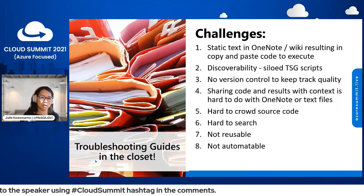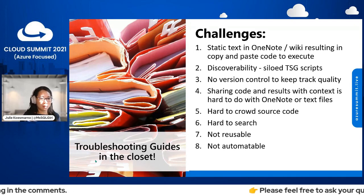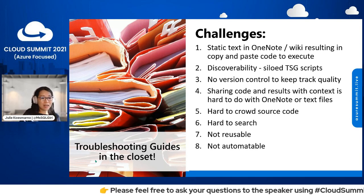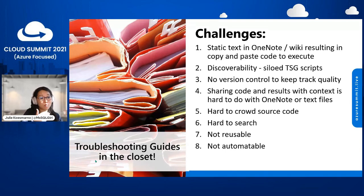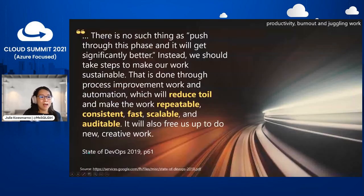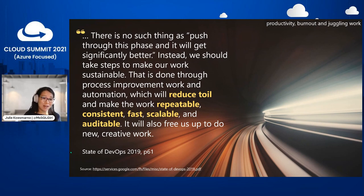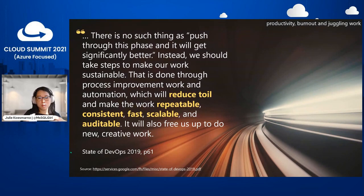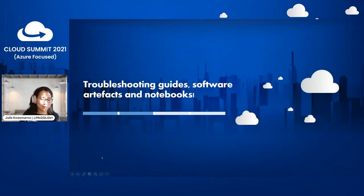To summarize the troubleshooting guide challenges today: there's a lot of copying and pasting with static guides, they're hard to discover, hard to track changes on, and you have to think about quality. Is it testable? If you ship a new system, is your troubleshooting guide in parity with that new version? It's not easy to crowdsource, not easy to search, not reusable, and not automatable. The 2019 State of DevOps Research emphasized that reducing toil is critical to making ops work repeatable, consistent, fast, scalable, and auditable.